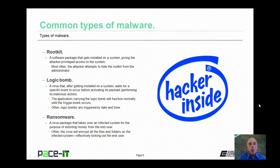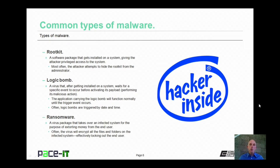We have the rootkit. This is a software package that gets installed on a system, giving the attacker privileged access to the system. It's usually installed in the root file — that's why it's called a rootkit. Most often the attacker attempts to hide the rootkit from the administrator to avoid being removed from the system.